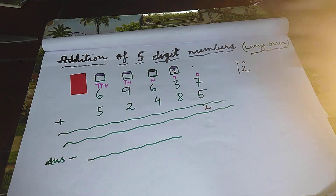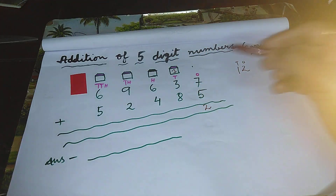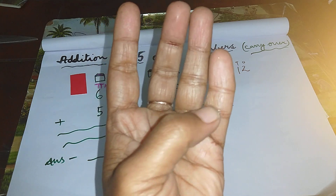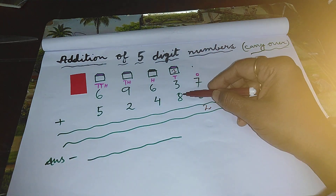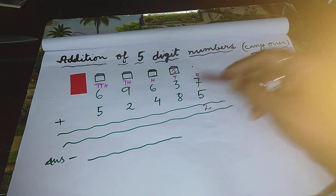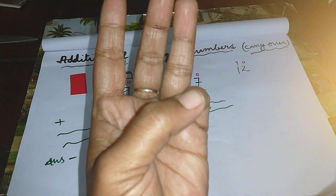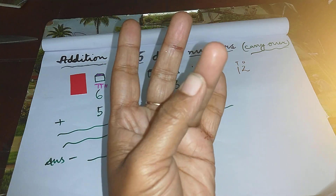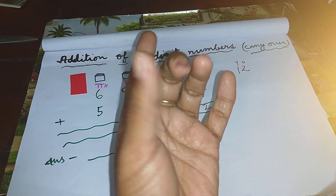The first digit is one — count one. The second digit is three, so count more three lines: one, two, three. The next digit is eight, so count more eight lines from the next line: one, two, three, four, five, six, seven, eight.